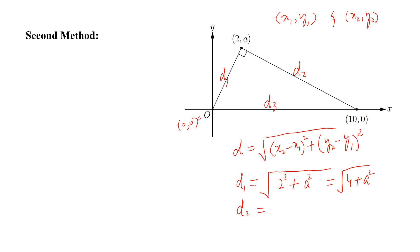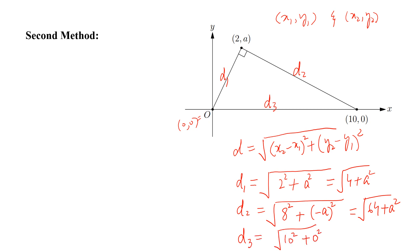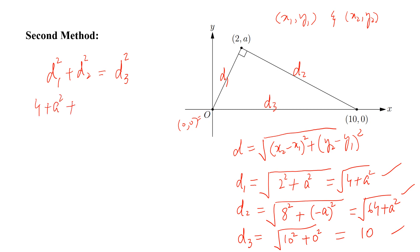Similarly, d2 equals the square root of (10 minus 2) squared plus (0 minus A) squared, which equals the square root of 64 plus A squared. And d3 equals the square root of 10 squared plus 0 squared, which equals 10. This triangle is a right angle triangle, so d1 squared plus d2 squared equals d3 squared. Substituting: 4 plus A squared plus 64 plus A squared equals 100, giving 68 plus 2A squared equals 100.